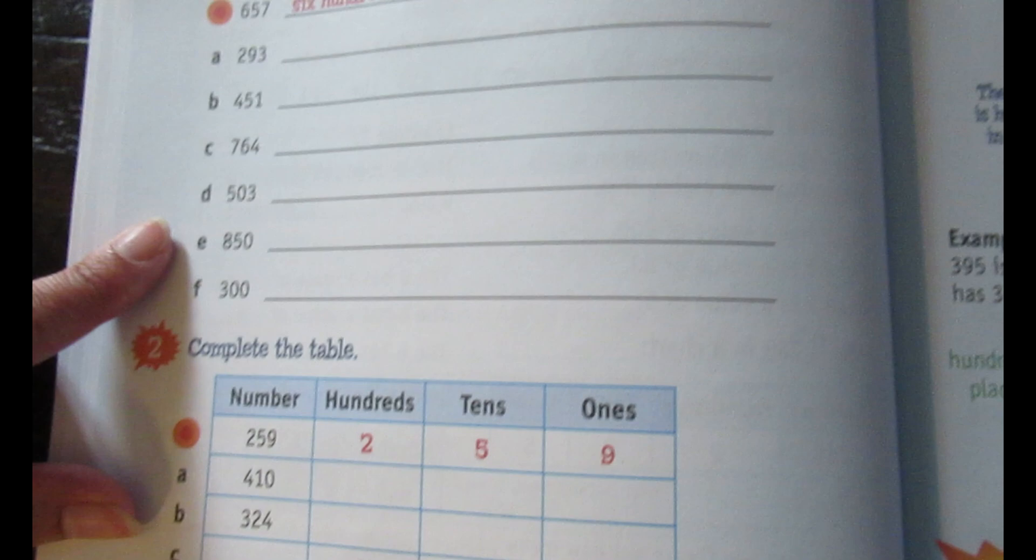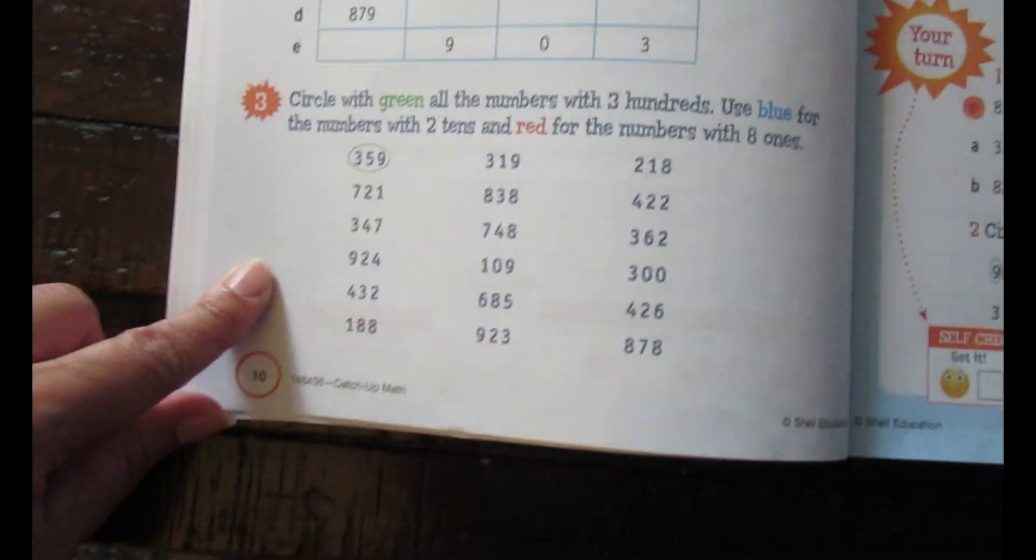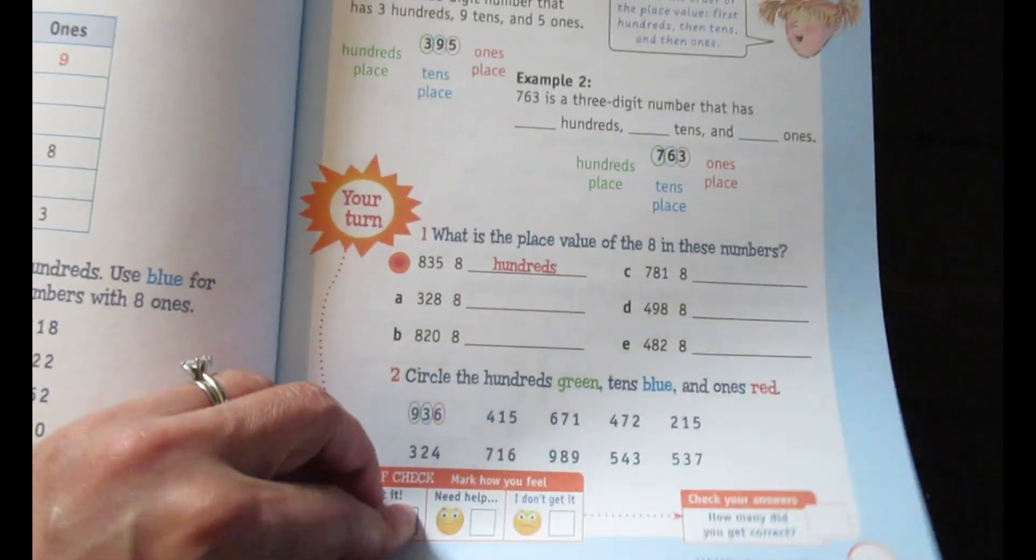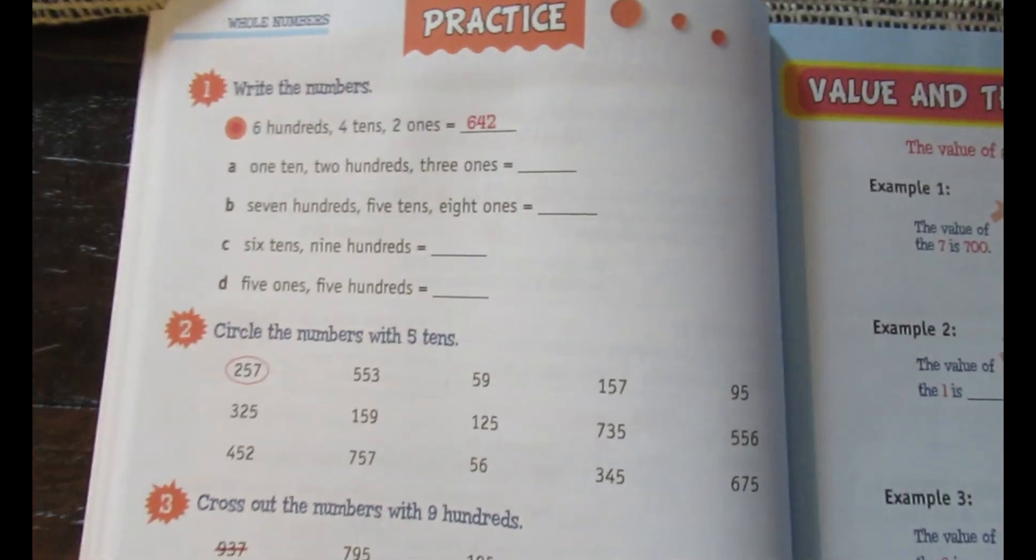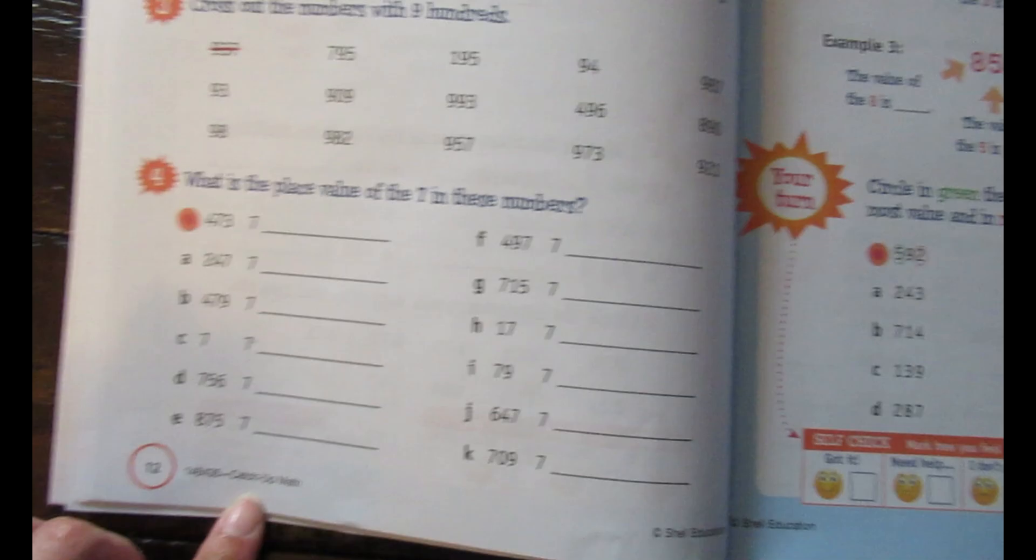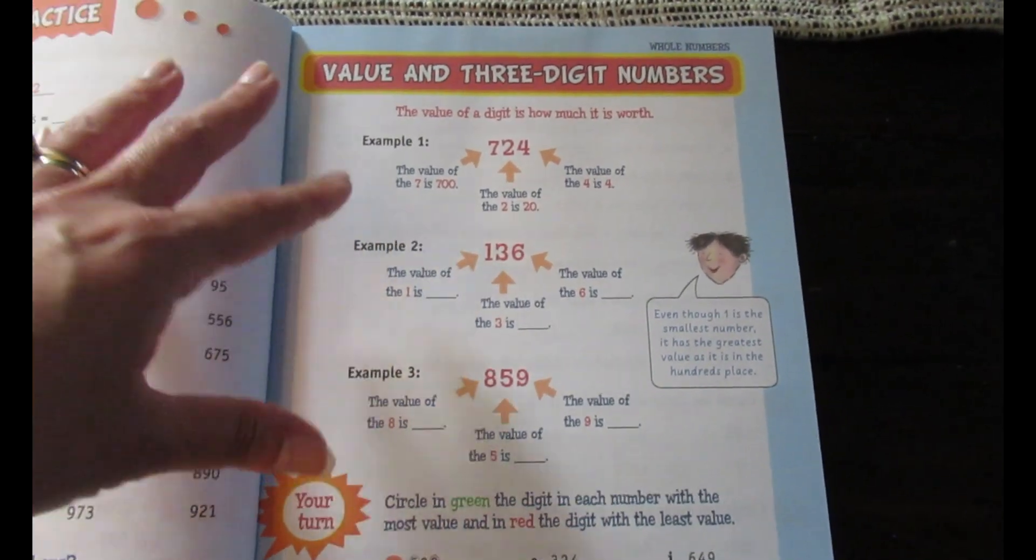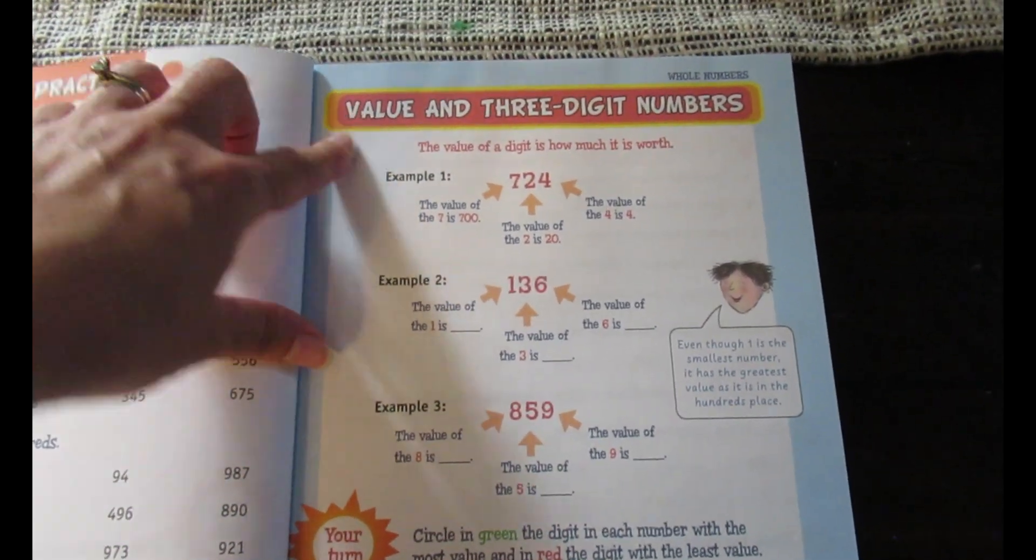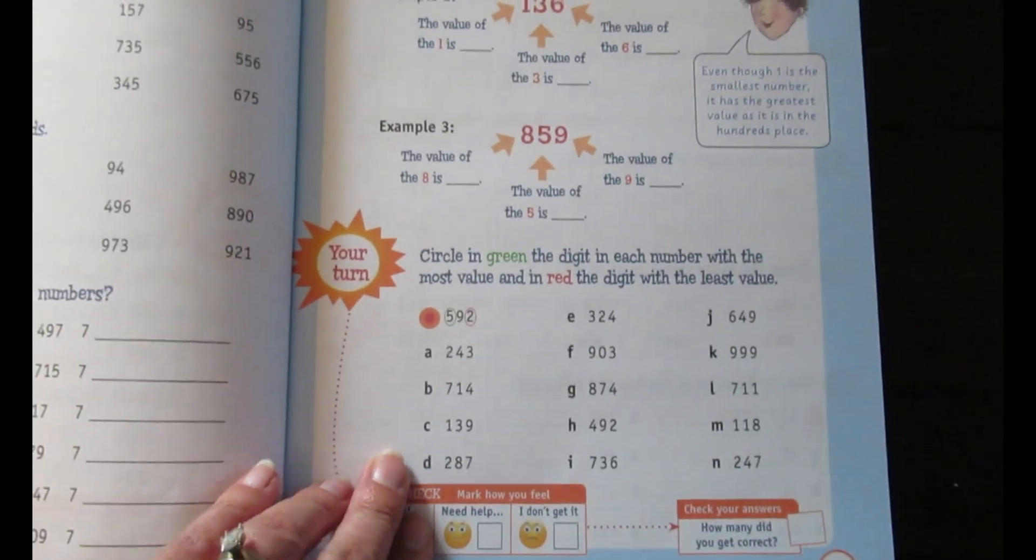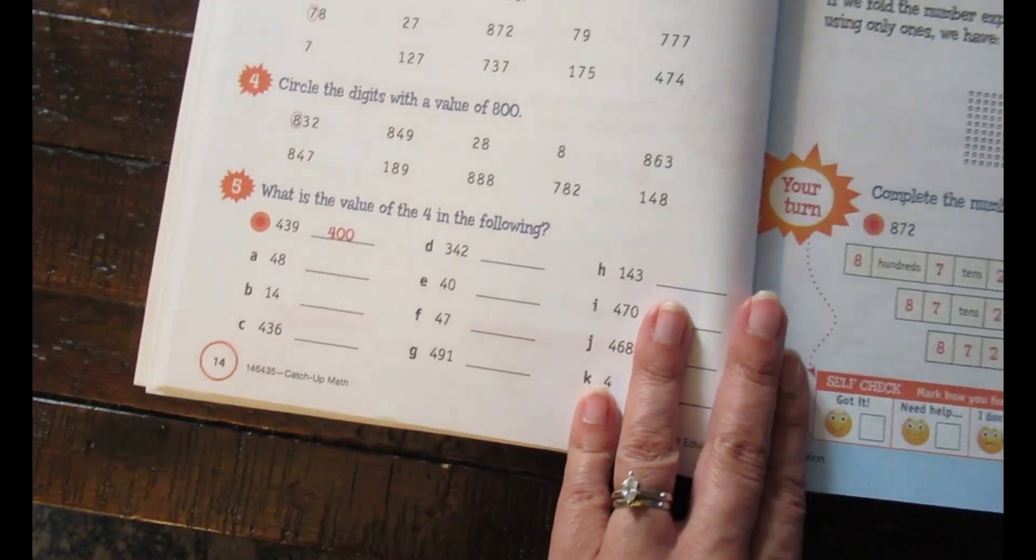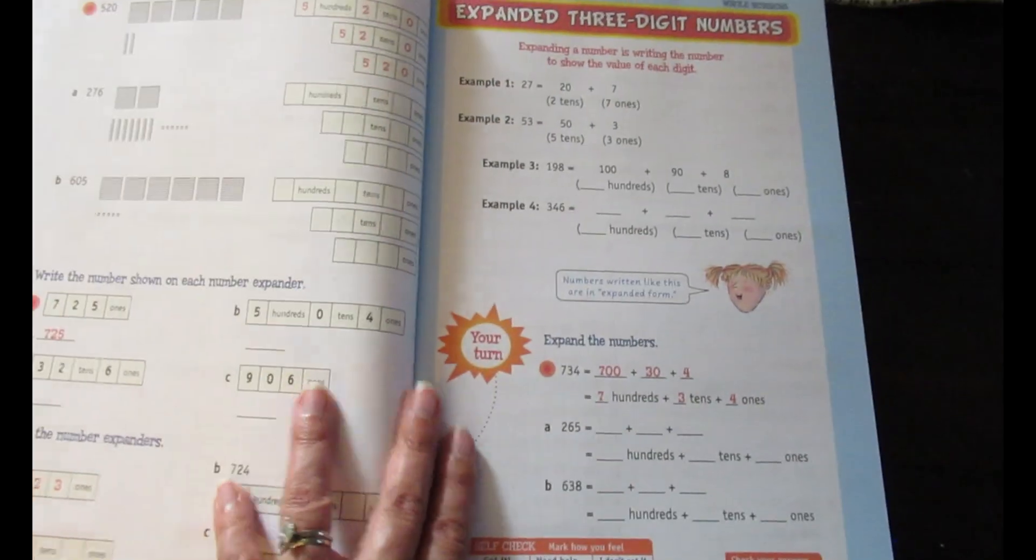There's a practice section that gives you some practice problems. Now we're on to a new topic. Same thing: here are your examples, your turn section, and then practice. I really like this. It gives the child an opportunity to fill in those holes and understand the topics at hand. Place value in three-digit numbers: examples, your turn, and a practice section. I'll just kind of flip through.